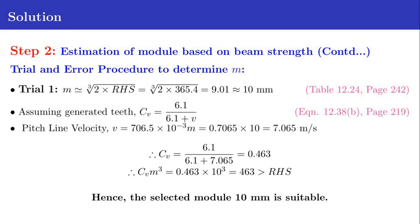To find out the module M, we follow a trial and error procedure. For the first trial, we obtain M approximately as cube root of 2 times RHS. RHS is 365.4, thus M is obtained as 9.01. We standardize this value 9.01 to a higher value, 10 millimeter. This standardized module 10mm can be obtained from table 12.24 in page 242.